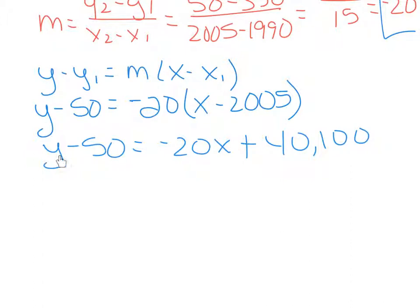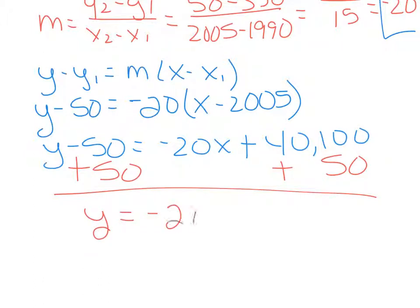Then we need to isolate this y, so we're going to add 50. And this is the like term down here. So y equals negative 20x. These are same signs, so this is going to be plus 40,150. And this is your final equation here.